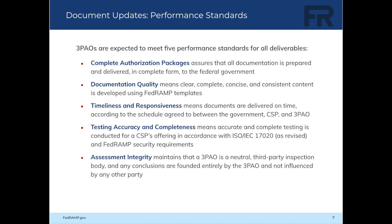Testing accuracy and completeness means accurate and complete testing is conducted for a CSP's offering in accordance with ISO/IEC 17020 as revised and FedRAMP security requirements. Assessment integrity maintains that a 3PAO is a neutral, third-party inspection body, and any conclusions are founded entirely by the 3PAO and not influenced by any other party.